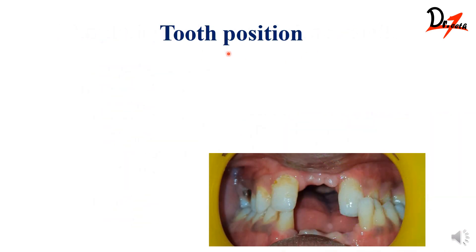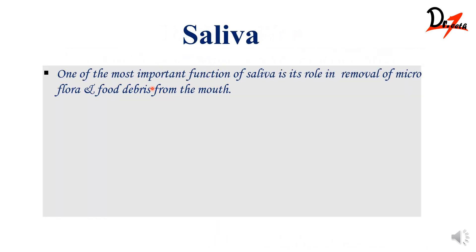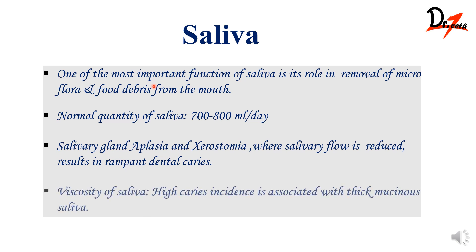The next factor is tooth position. If the teeth are malaligned, rotated, or out of position, it won't be easy to clean them. As a result, there will be food and debris accumulation, and such patients are more prone to caries.